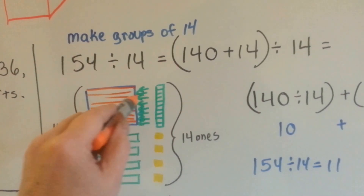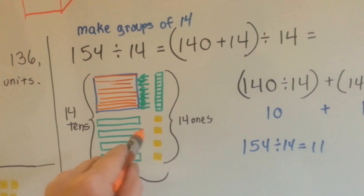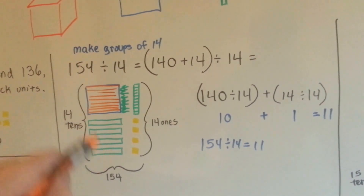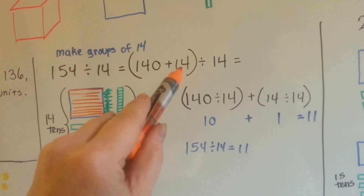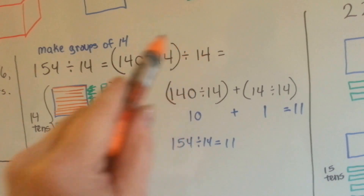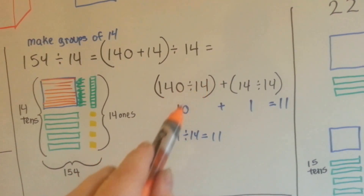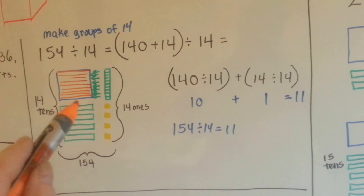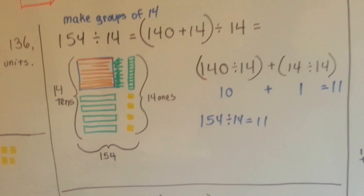That one goes to the first one, the second one goes to the second one. So instead of 10, they're each going to be 11. So 154 can be broken up into 140, which is 14 tens, and 14 ones. Both can be divided by 14 — like the distributive property. 140 divided by 14 is 10, because 10 times 14 is 140. 14 divided by 14 is 1, so our answer is 11. We had a 10 with one more making 11 for each group, so 154 divided by 14 is 11.